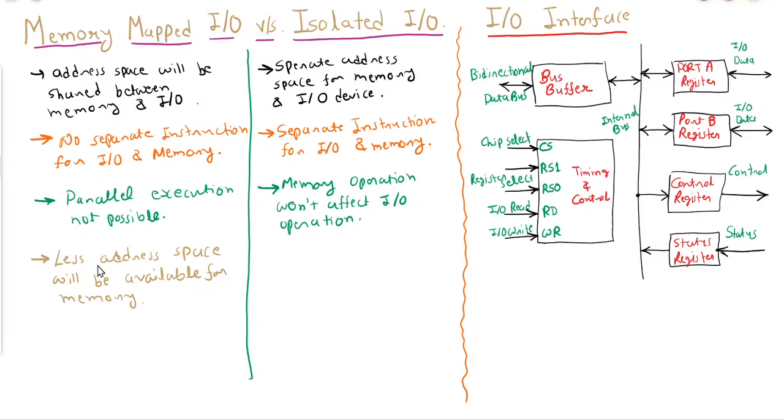Another downside is that less address space will be available for memory, because the total address space is divided between memory and IO devices.